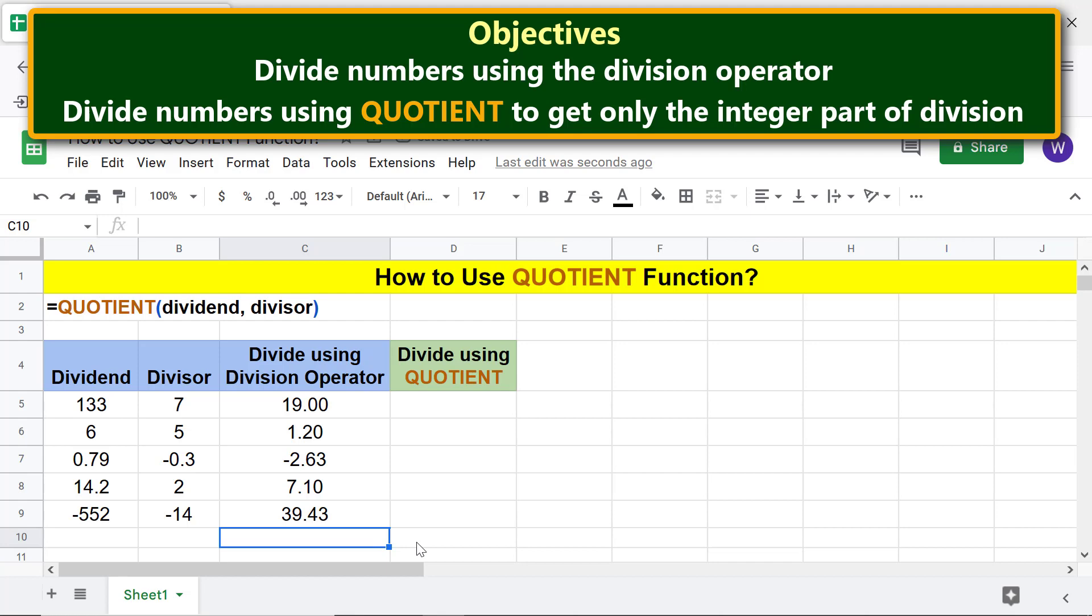Ok, the division operation result has the quotient and remainder. Now, we will divide the numbers using the quotient function.